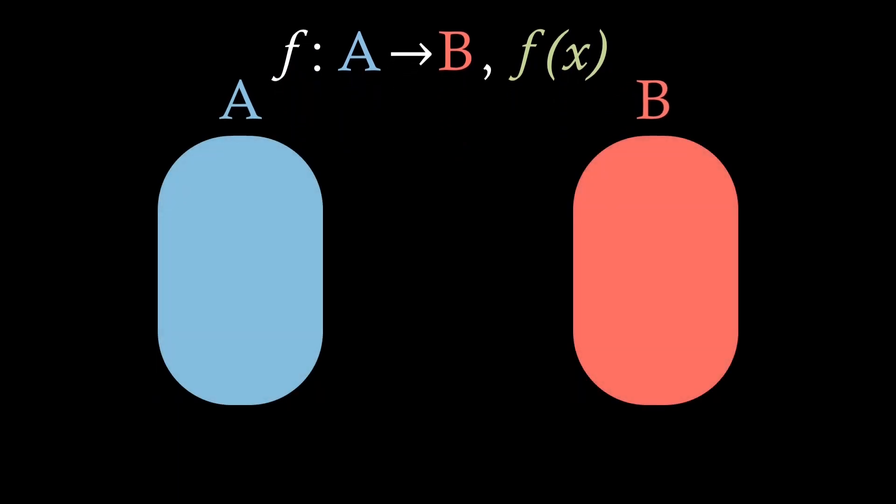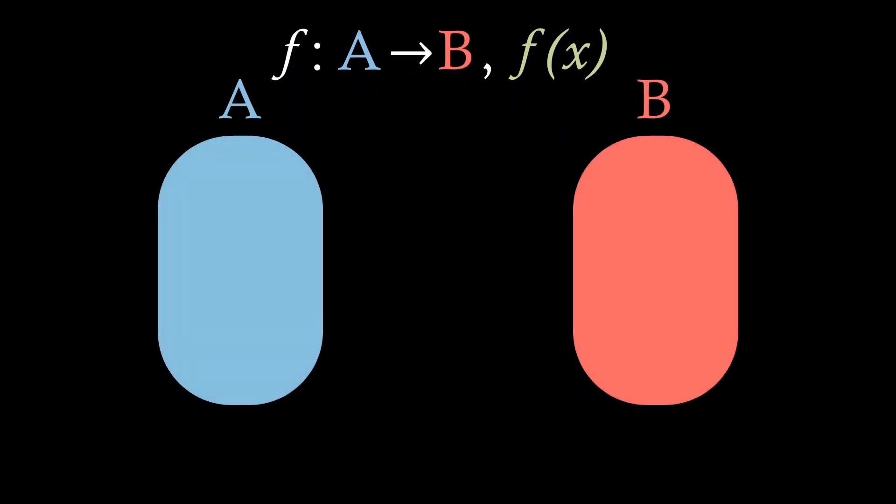So what does this mean visually? So with our domain in blue here, and our codomain in red, it is a mapping from A to B. Where A and B are groups, these can be infinite or finite.